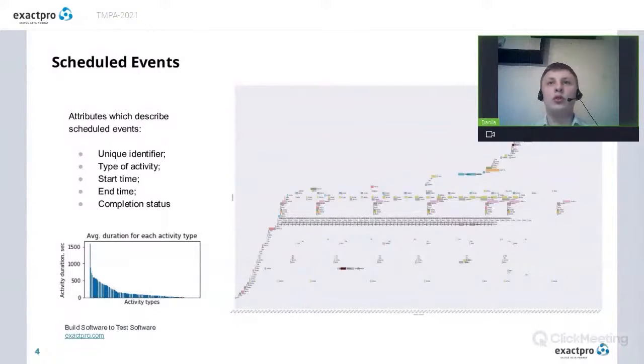So now let's talk about the data. We have two sources where we got it. The first one is a data set describing scheduled events in our system. Each of such event can be described by using the following attributes: a unique identifier, type of activities, start time and time, and completion status. So on this plot we can see a distribution of durations for all activity types.